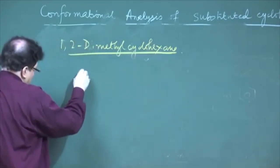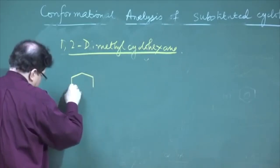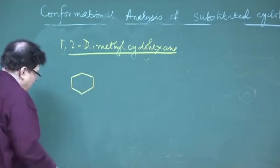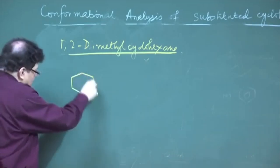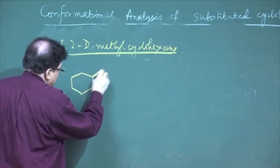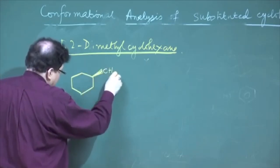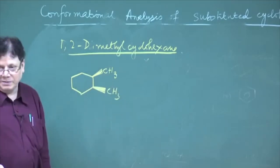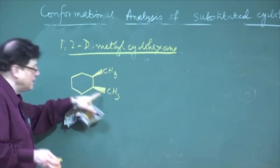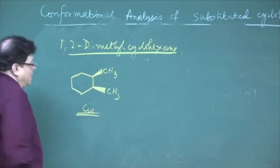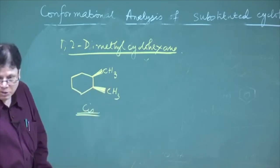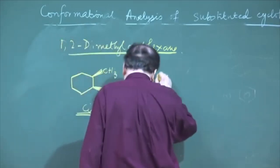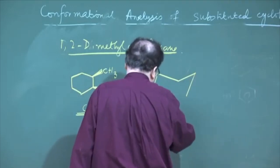First, take the cis form. In the planar hexagonal formula — just for simplicity — the cis compound, cis-1,2-dimethylcyclohexane: if I put one methyl beta, then I have to put the other methyl also in the beta orientation. I could have done the opposite — one alpha, the other alpha — that is also the cis isomer. Now this is not the actual conformation because it does not exist as a planar hexagon, so I convert it into the chair form.